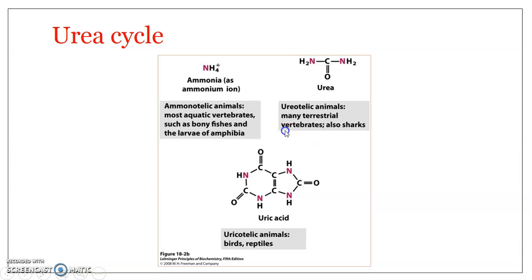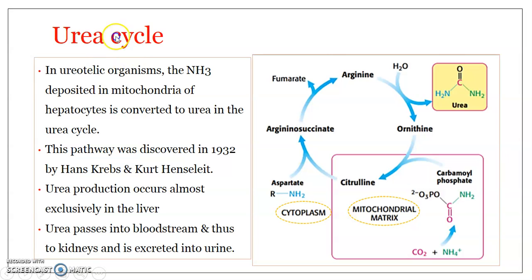Based on whether they excrete urea or uric acid, we have ureotelic and uricotelic animals. Ureotelic animals are terrestrial vertebrates, including humans. In these organisms, the ammonia produced as a result of protein metabolism is converted to urea. This conversion is deposited in the mitochondria of liver cells and is what is referred to as the urea cycle.